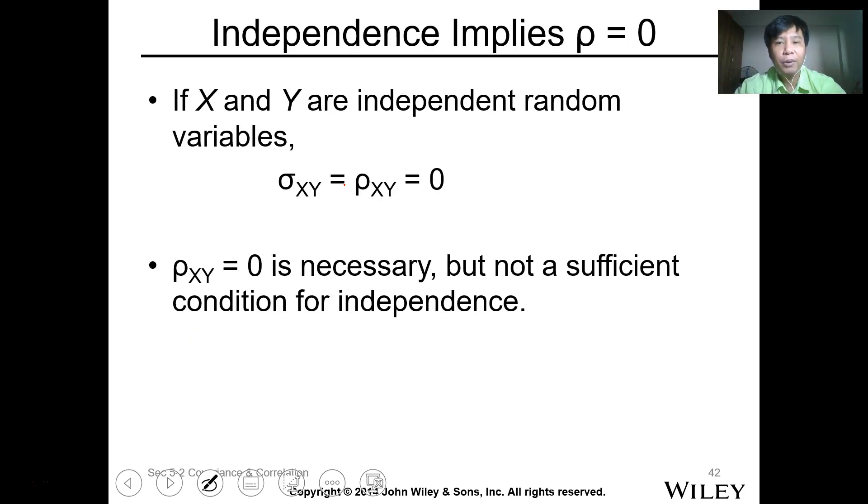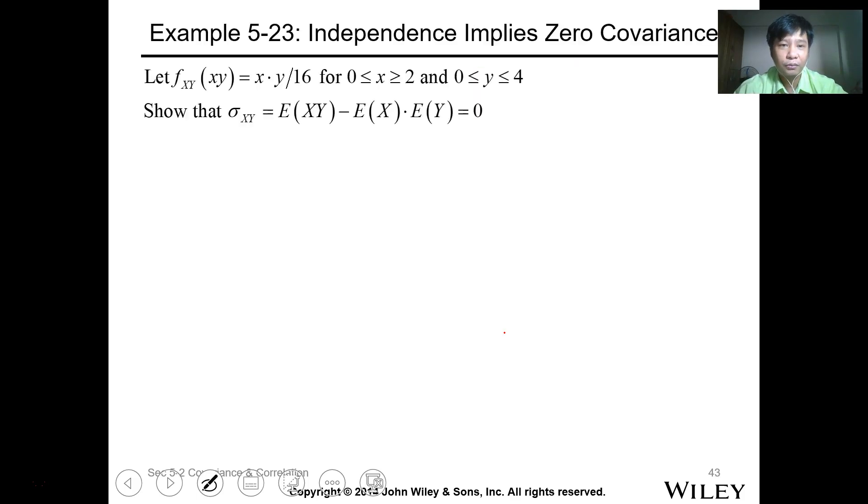For independence of variables, it implies that when your rho equals 0, then it's basically probably independent. But it's not necessary that when it's 0, the variables are independent. But if they're independent, your rho or correlation should be 0. Let's have this example: independence implies zero covariance. Let f(x,y) = xy/16 for 0 ≤ x ≤ 2 and 0 ≤ y ≤ 4.